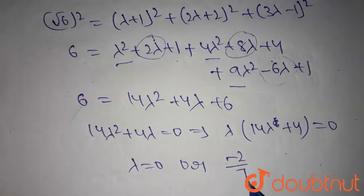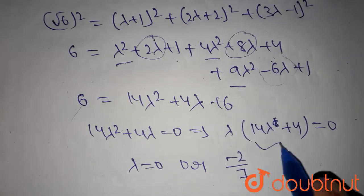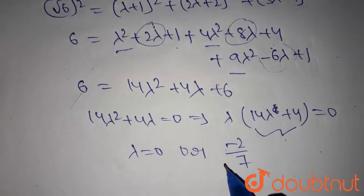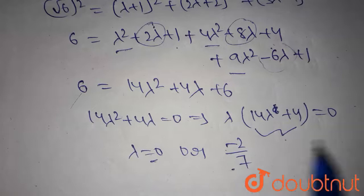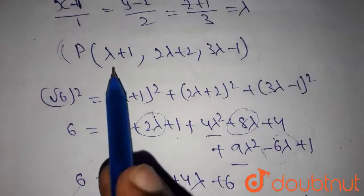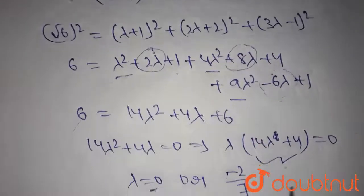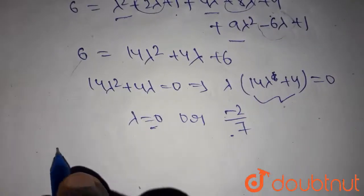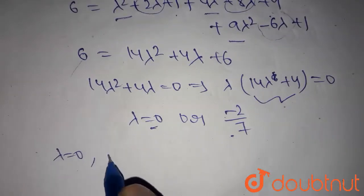From this, substitute these two values in the given point P. For lambda equals 0, P comes as...